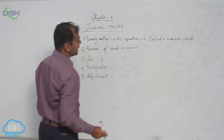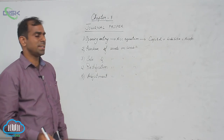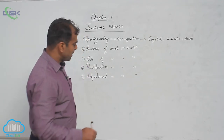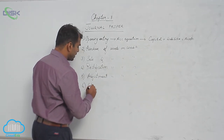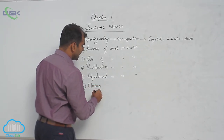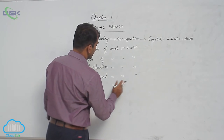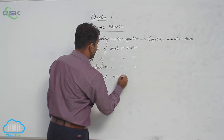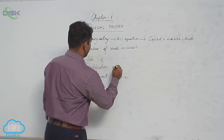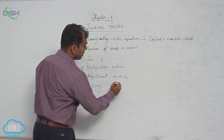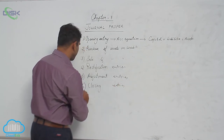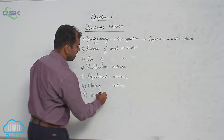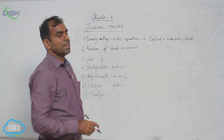Next, we have adjustment entries, which are most useful in final accounts. You will learn about adjustment entries in detail when we discuss the topic of final accounts. Then we have closing entries, and finally we have transfer entries.